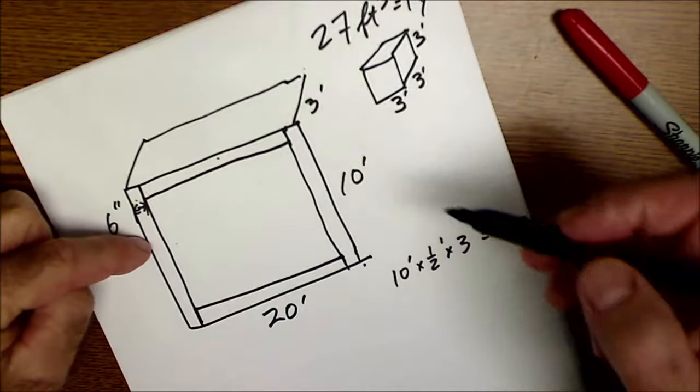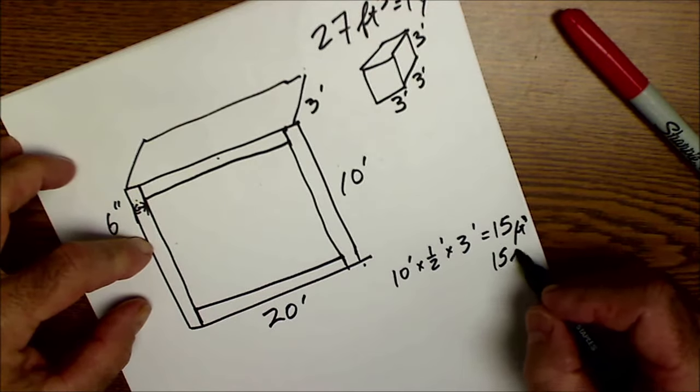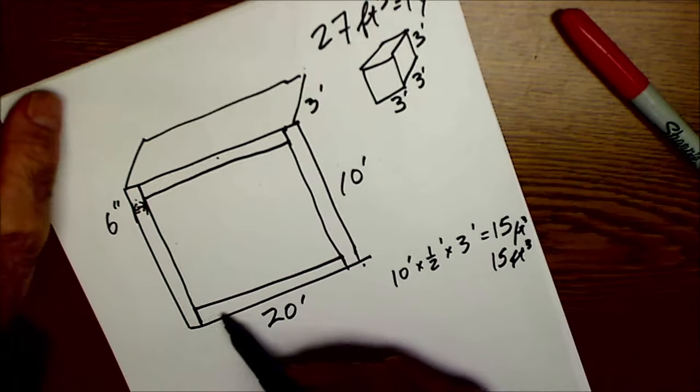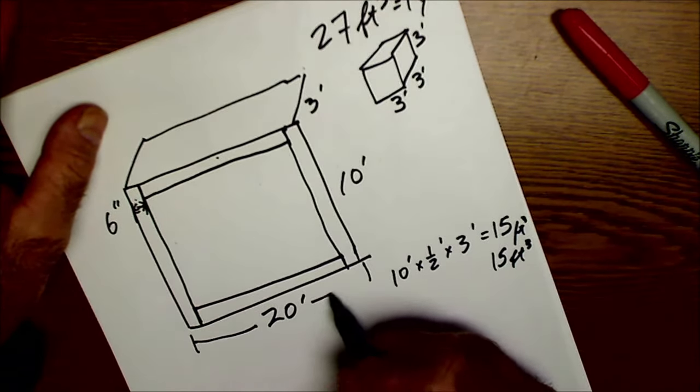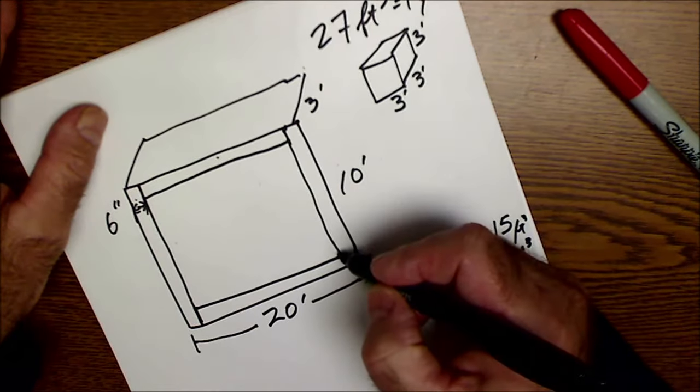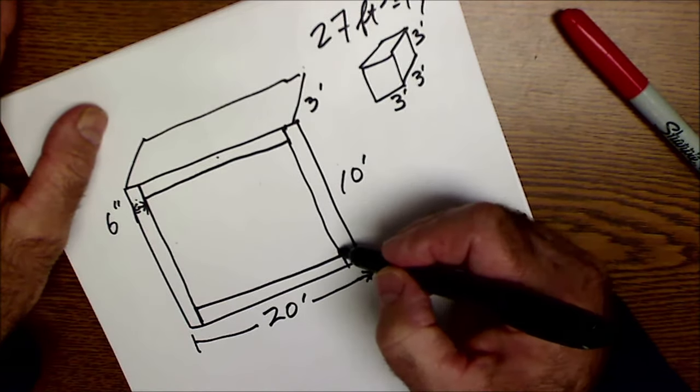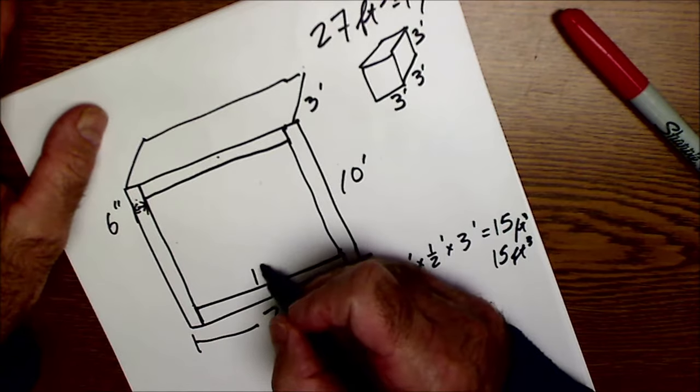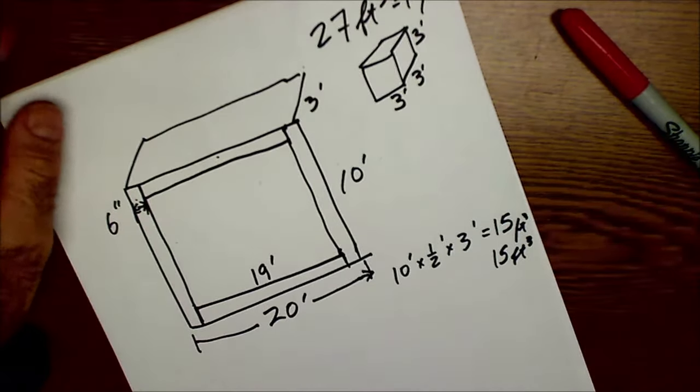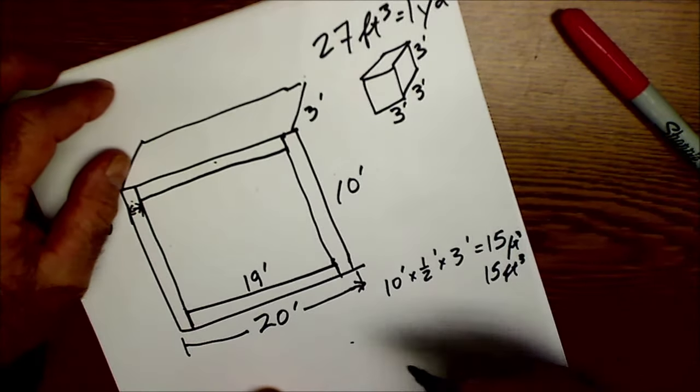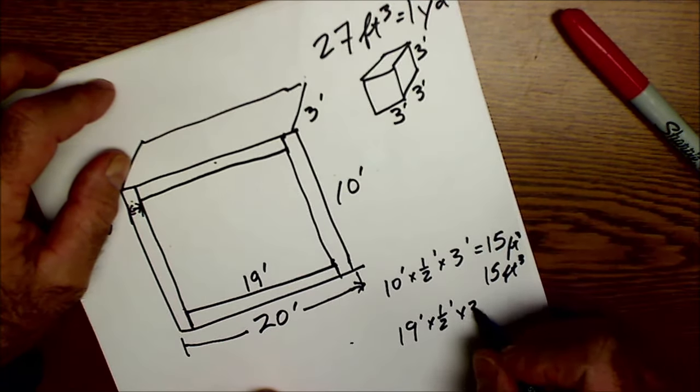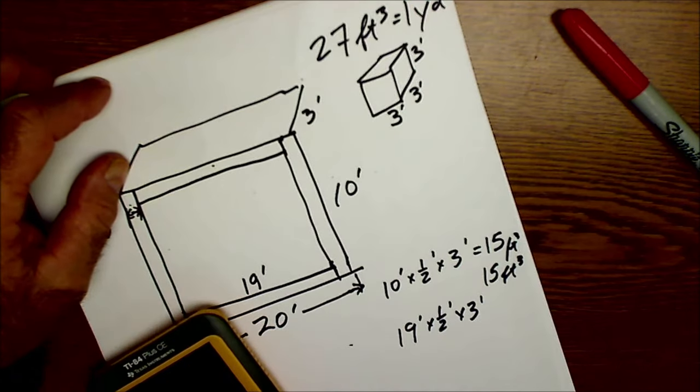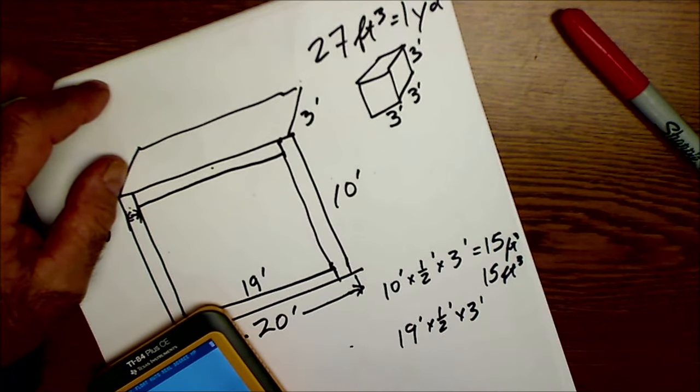This rectangle here, even though it's 20 on the outside from here to here, I got it calculated on the inside, so this is going to be minus six inches minus six inches—this is only 19 feet. So now I'm going to take that 19 feet times a half foot times three feet.